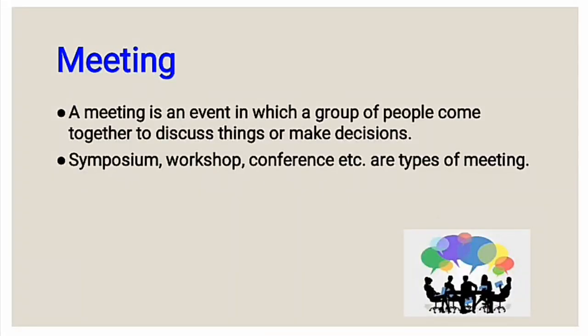The first one is meeting. A meeting is an event in which a group of people come together to discuss things or make decisions. A group of people can be any number — they come together, sit together, discuss a topic, and then make decisions. Symposium, workshop, and conference are all types of meetings.